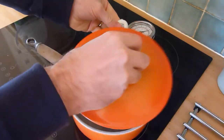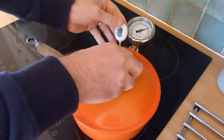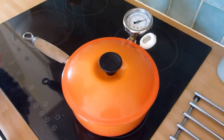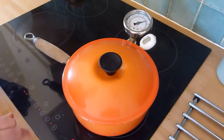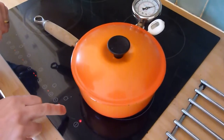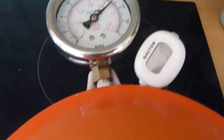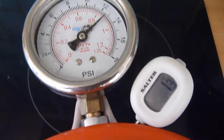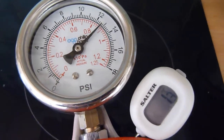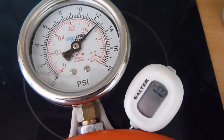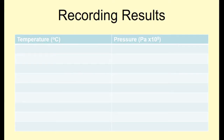I'm going to put the lid on. I'm going to turn the hob on now to start increasing the temperature. Now that I've started my experiment, I need to start taking some readings. I'm going to be taking temperature from the thermometer and pressure from the pressure gauge. You're going to need to copy down this results table and fill in the results as you see them on the screen.